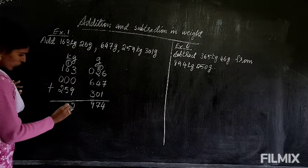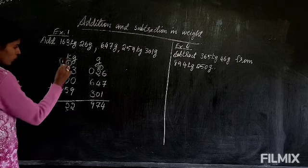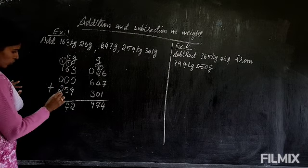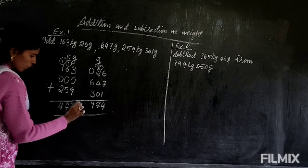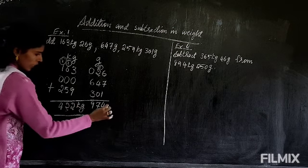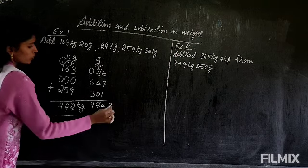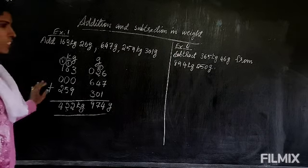So 2 you will write here, 1 carry over. 1 plus 1, 2. 2 plus 2, 4. So the answer is 422 kilogram and 974 gram. This is the answer. Next, we will come to the subtraction.